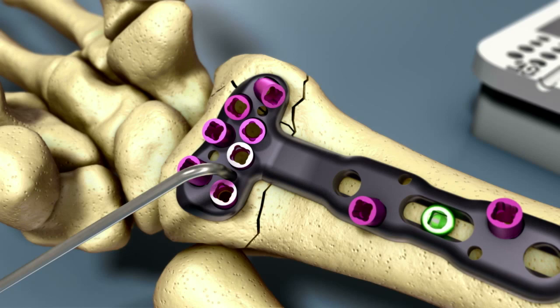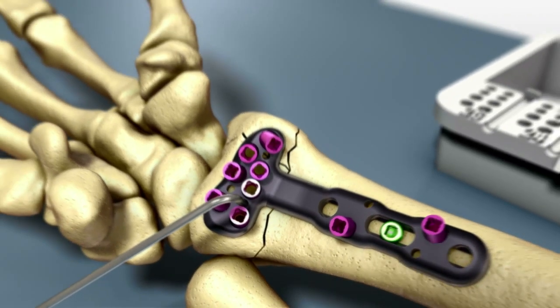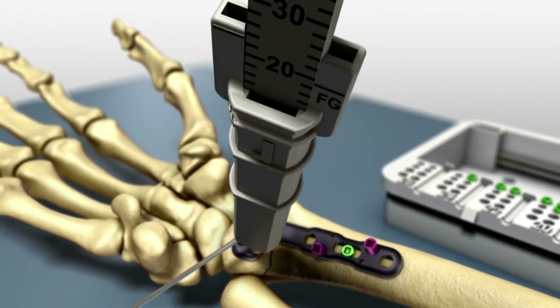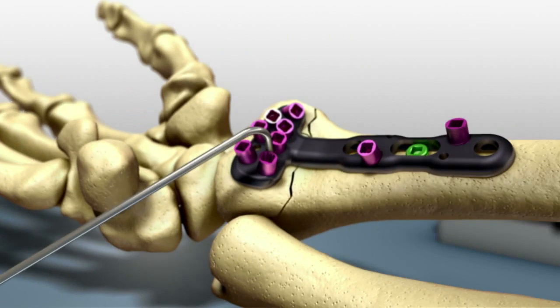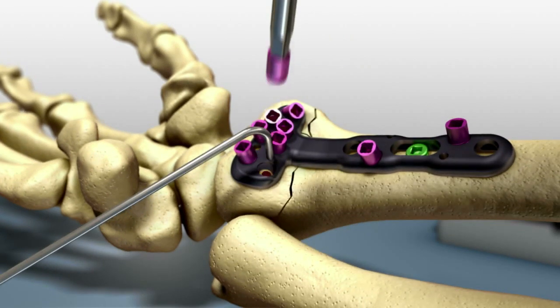First stabilize the lunate fossa by using a 2.2 millimeter drill bit through the proximal ulnar fast guide insert. When selecting screws in the metaphysis, the surgeon may choose one to two millimeters less than the reading for unicortical purchase to reduce the risk of tissue irritation. Verify using fluoroscopy.